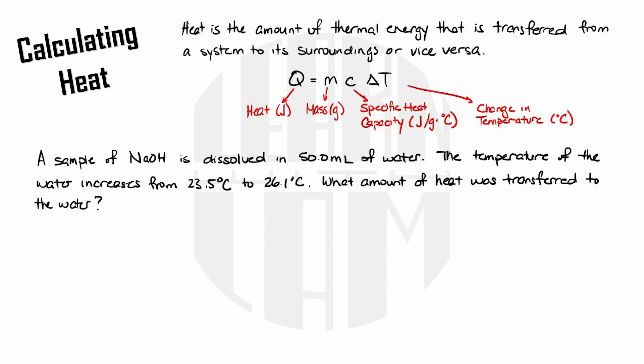Now right off the bat we can see that we're looking for heat so let's write our heat equation down again. But also notice that we are specifically looking for the heat transferred to water. This means that all of our information needs to be about water. All of it. Mass of water, specific heat capacity of water, and change in temperature of water.